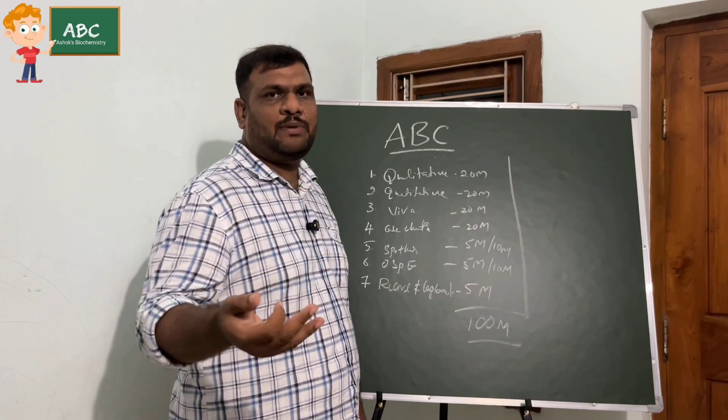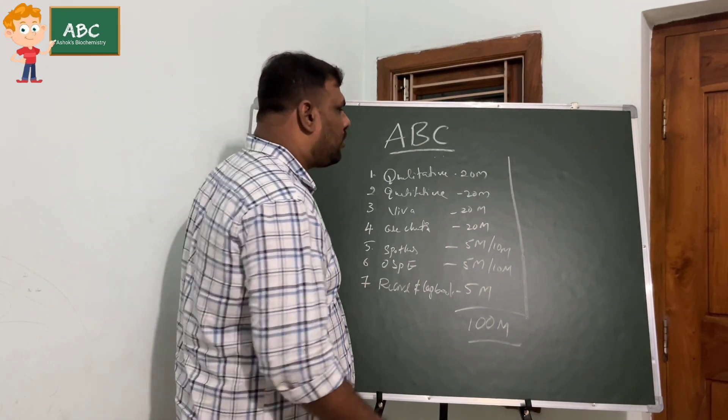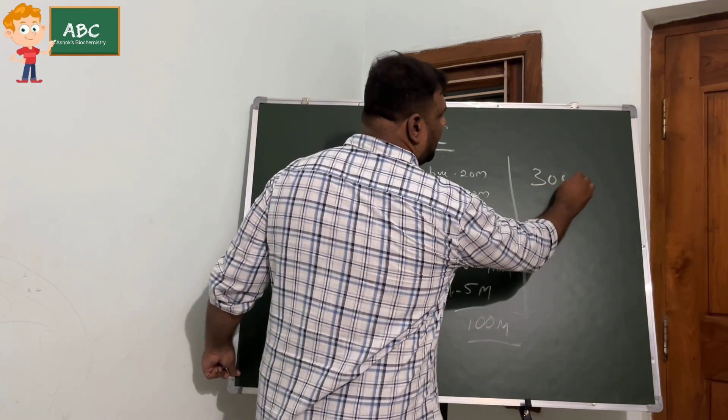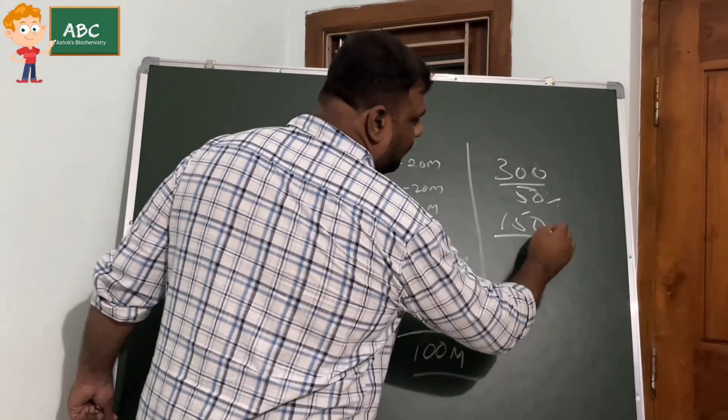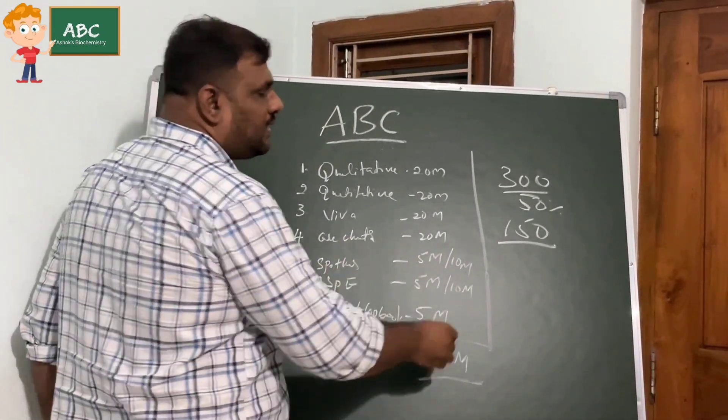We'll go with an outline. We have a total of 300 marks where you're supposed to secure 50 percent, that means you should get 150. This 150 has two phenomena - theory as well as practical.